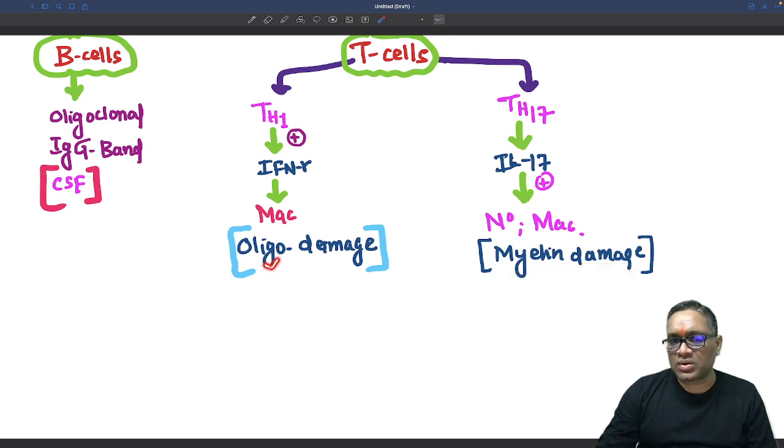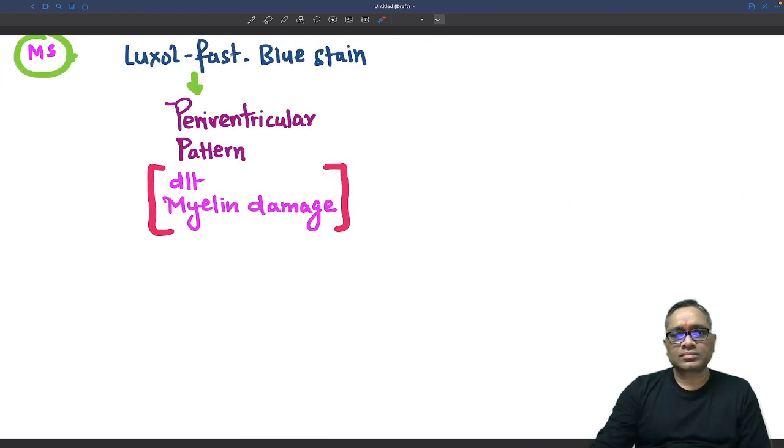What we observe is oligodendrocyte and myelin damage. This demyelinating disorder results from T cell involvement. We can observe this demyelination with a special stain called Luxol Fast Blue stain.